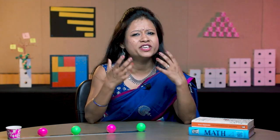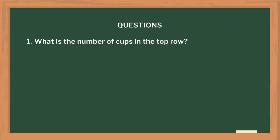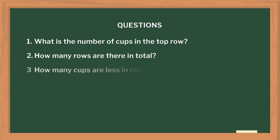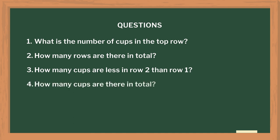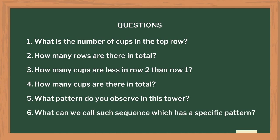You can also initiate various discussions by asking questions like: What is the number of cups in the top row? How many rows are there in total? How many cups are less in row 2 than row 1? How many cups are there in total? What pattern do you observe in this tower? What can we call such a sequence which has a specific pattern? Once I bring their attention to the pattern and arrangement of each tower, I guided them to the pattern as in arithmetic progression.